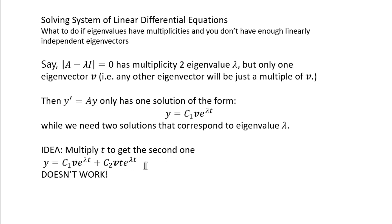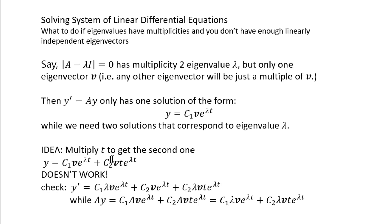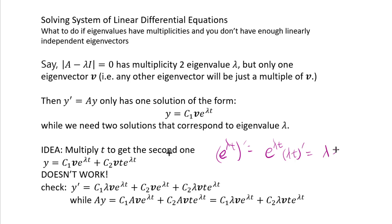Unfortunately, this wouldn't work in our case. If you actually try to plug in to the equation y prime equals Ay, the left side, when you differentiate — every time you differentiate e to the lambda t, the chain rule says lambda must be brought out. So e to the lambda t prime gives lambda e to the lambda t. But when you differentiate the product t·e^(λt), because it's a product of two things, you have to differentiate t and then differentiate e to the lambda t, causing two terms to appear.